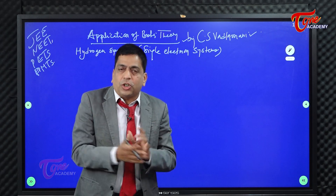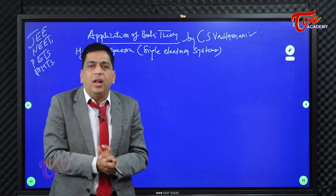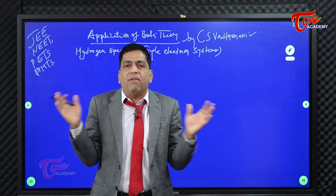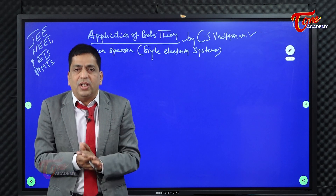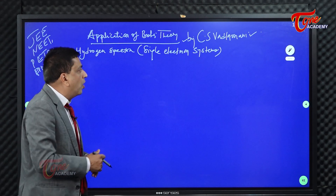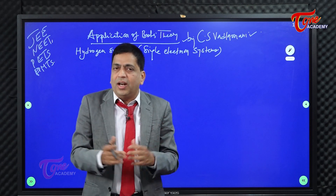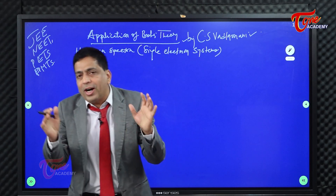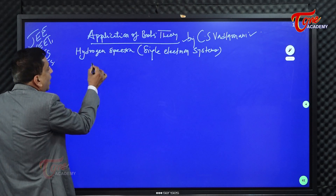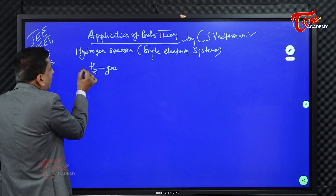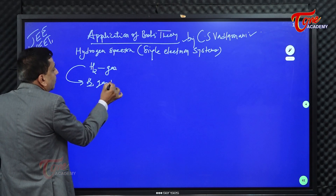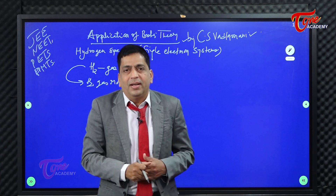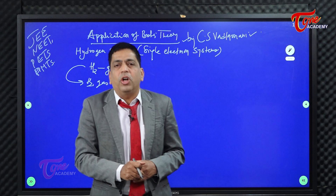We will put Bohr's model to the test with single electron systems. A system is a part of the environment under focus, under study, under observation. We want to apply Bohr's model to single electron systems, and there is no better single electron system than the hydrogen atom. So we take a sample of hydrogen gas. You have hydrogen gas molecules — you don't find ready-made hydrogen atoms because hydrogen atoms are unstable and readily combine to give hydrogen molecules.